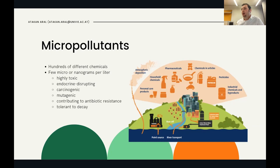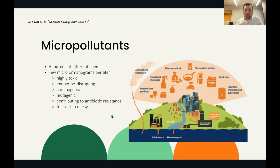Even at very low concentrations, micropollutants pose significant risks because they are highly toxic, endocrine disrupting, carcinogenic, and mutagenic. They contribute to antibiotic resistance and are tolerant to decay — they stay in the water for a long time. For our purposes, this persistence is actually a benefit: even in the downstream part of the river, we can detect these micropollutants, making them a good indicator of upstream pollution and a way to locate its source.